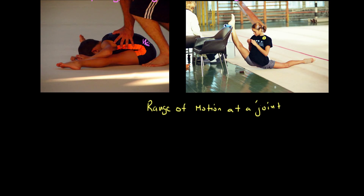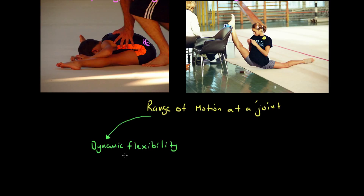We want to understand immediately that there are basically two forms of flexibility — some people argue there are more, but we're going to suggest there are two. The first is what we describe as dynamic flexibility, which in many ways is the type most relevant in a lot of sport performances. Dynamic flexibility is pivotal and central to many sporting performances because it takes into account speed — it's sort of like range of motion with speed.